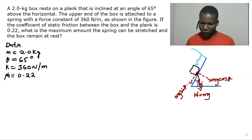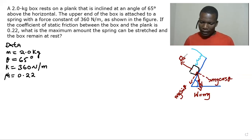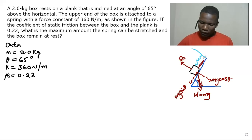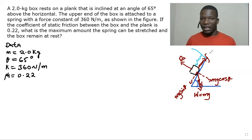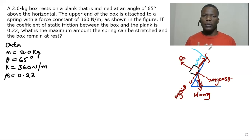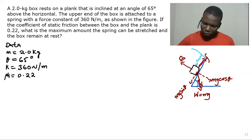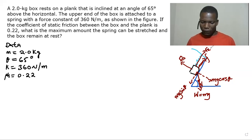In the vertical direction we have the normal force. On the other side we also have the friction force. In the direction of the friction force we also have the spring, and the force from the spring is what we call the restoring force, which we'll denote as F_r.